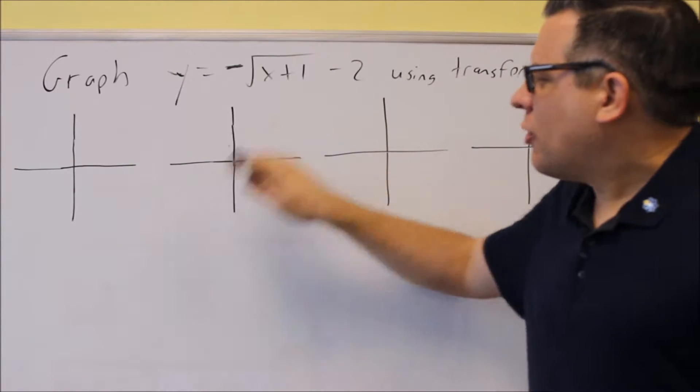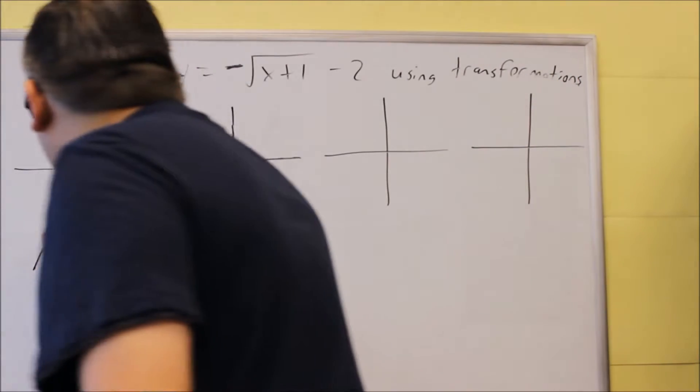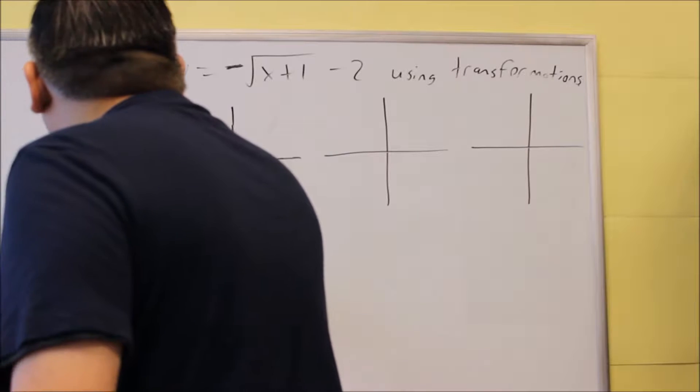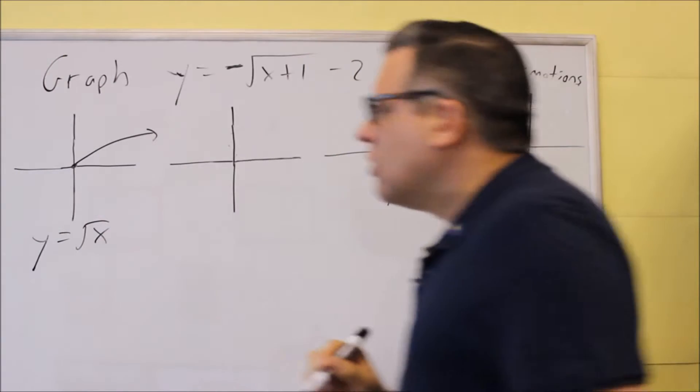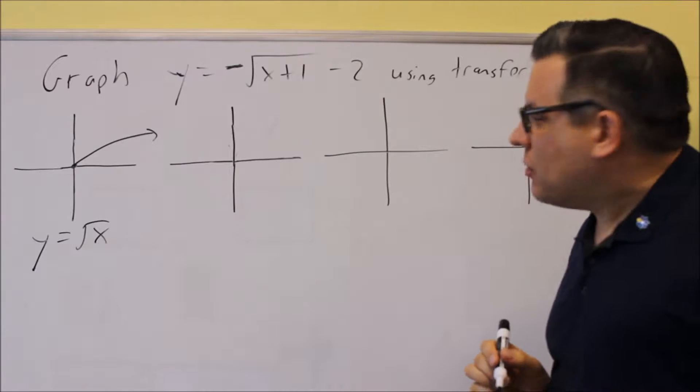Our first graph, of course, as always is going to be our base graph. We're going to do y equals square root of x. And the graph is going to look like that one, goes up and to the right.